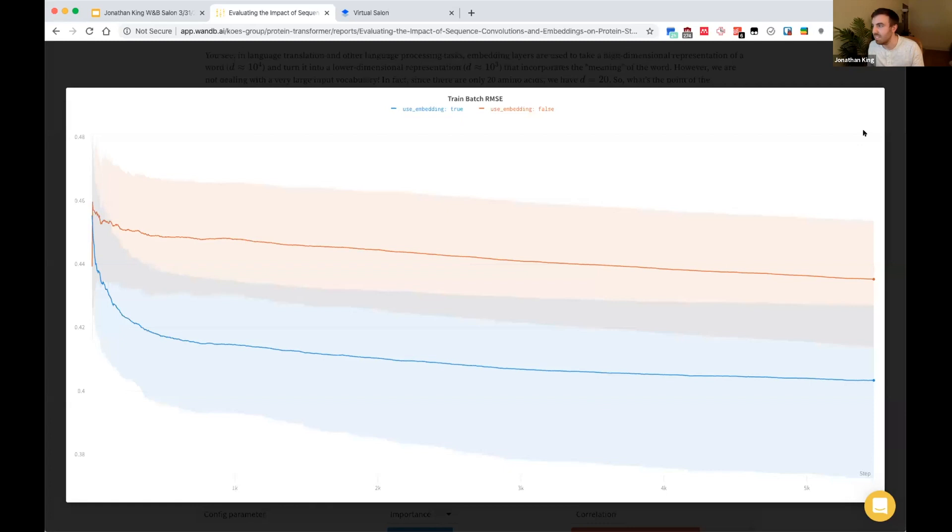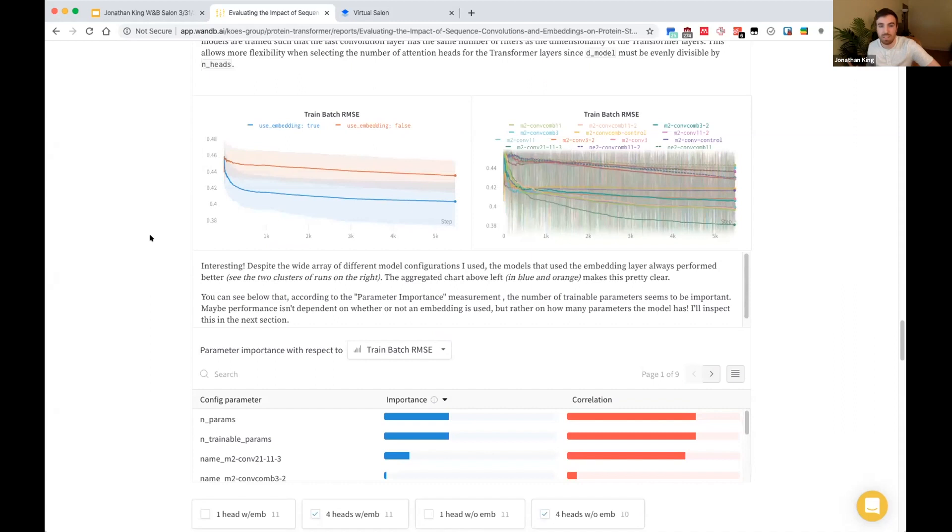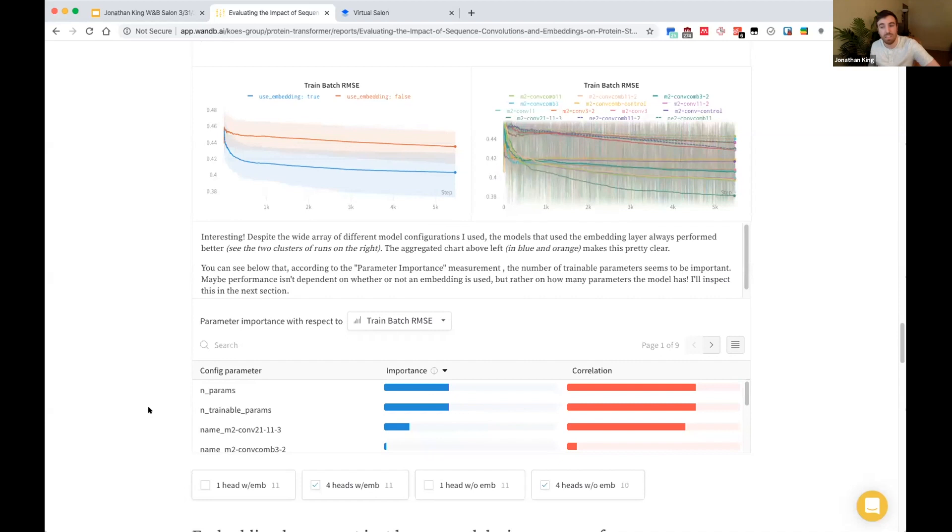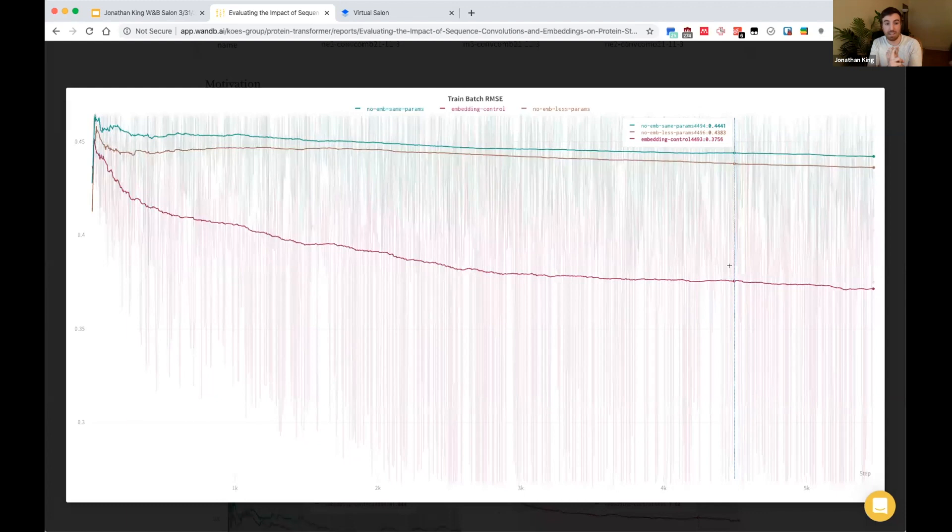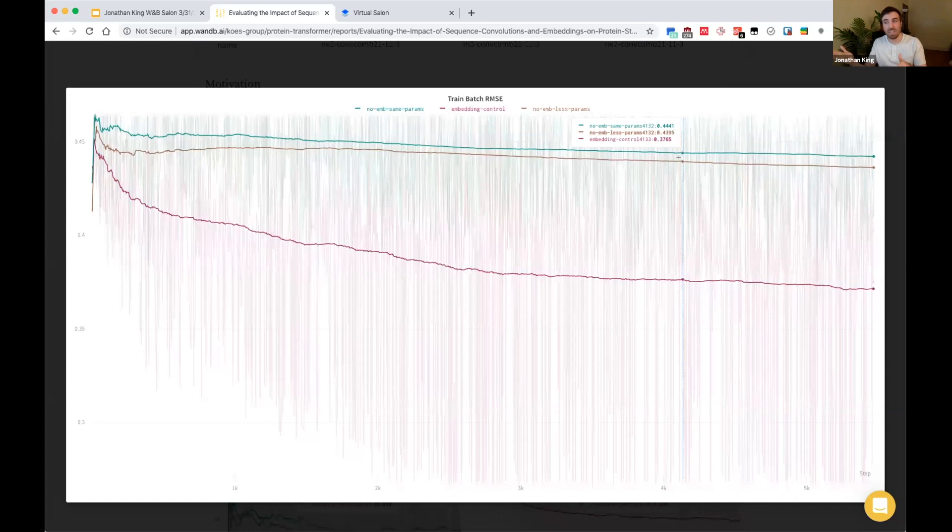Then I was thinking, even though this is telling me that the embedding is really helpful, is it just the fact that there's so many parameters in these models? For instance, this correlation and importance is telling me that the biggest difference between these is the fact that the models that have embedding layers just have more parameters. And so maybe that's the reason why they're improving. So I did one more experiment. In this experiment, I tested three models. The purple model has an embedding layer and the brown and the green models do not have an embedding layer. But the difference between the brown and the green is that I tried to increase the number of parameters in the green so it would have the exact same number of parameters. But this shows that even though you try to increase the number of parameters to be the same, the embedding layer is still really important.